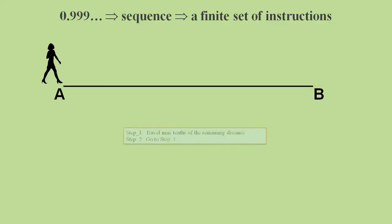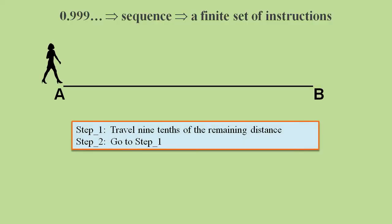The sequence could represent values that could be produced from a set of instructions, otherwise known as an algorithm, such as one for travelling distances between positions A and B. Step 1 tells us to travel nine-tenths of the remaining distance. So from the start, this will get us to position 0.9.